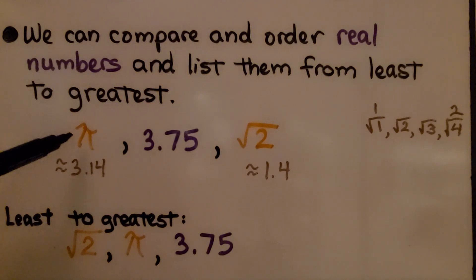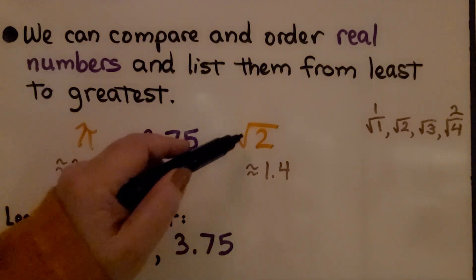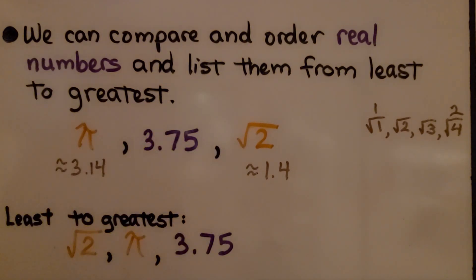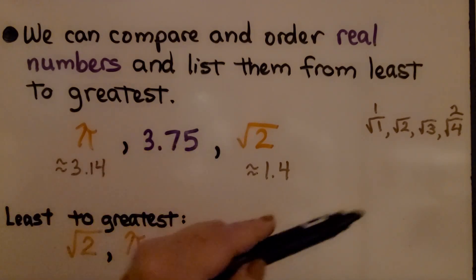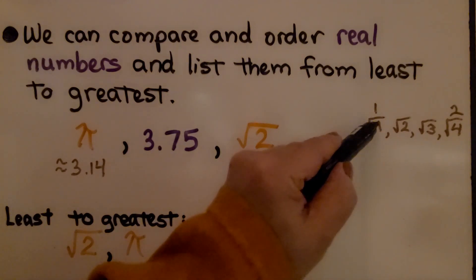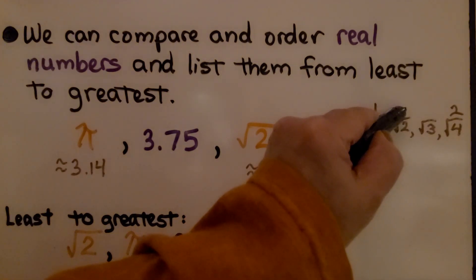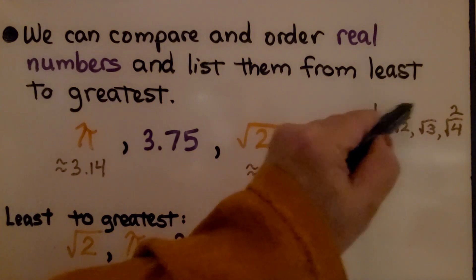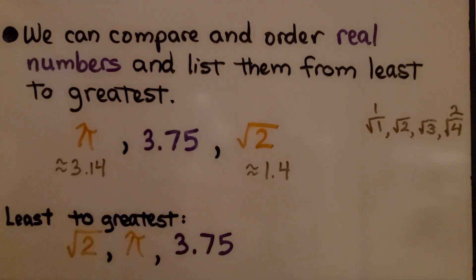Here we have the symbol pi, we have 3 and 75 hundredths, and we have the square root of 2. We know pi is approximately 3.14, and the square root of 2 falls between the square root of 1 and the square root of 4. So we know it's greater than 1 and less than 2 — we can say it's approximately 1.4.